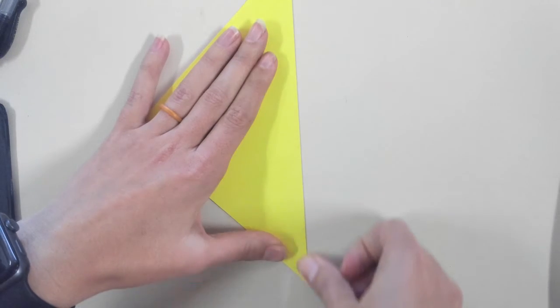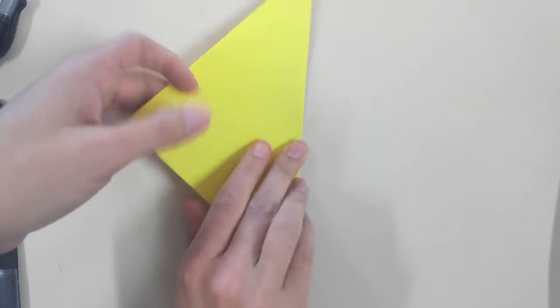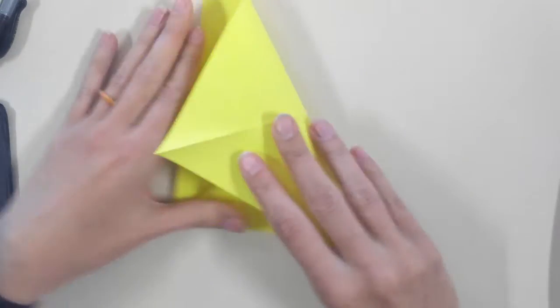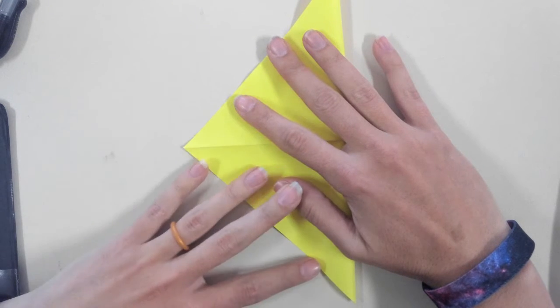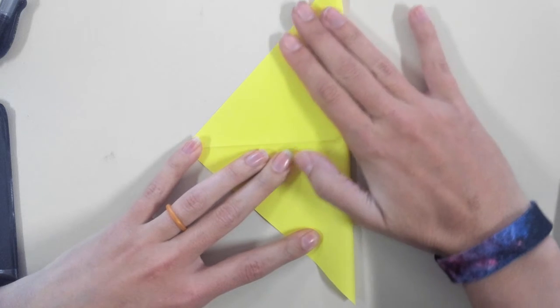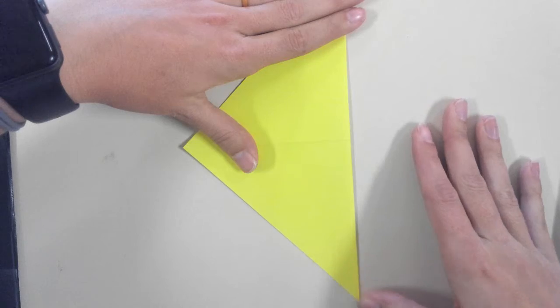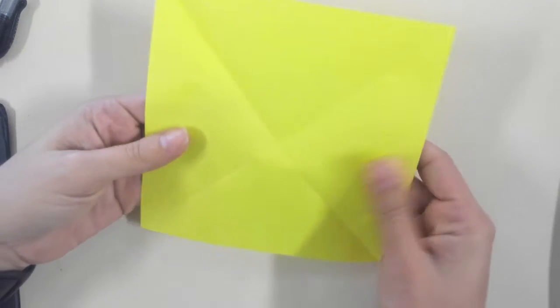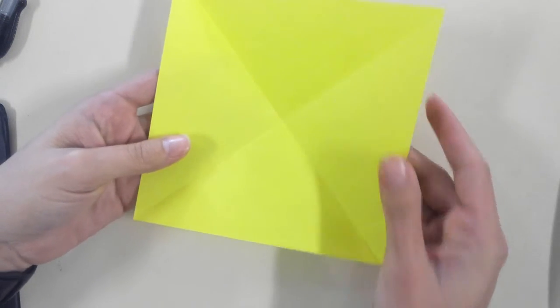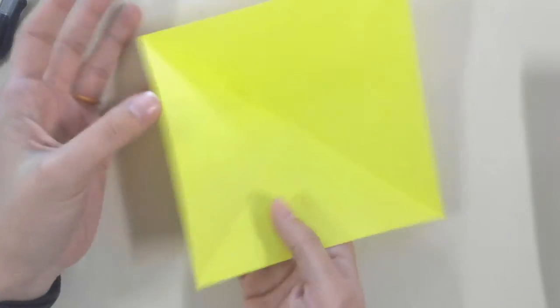I'm going to do it this way. So you're folding corner to corner, giving you an X. And then flip it over. So it's like this, right? Now flip it over.